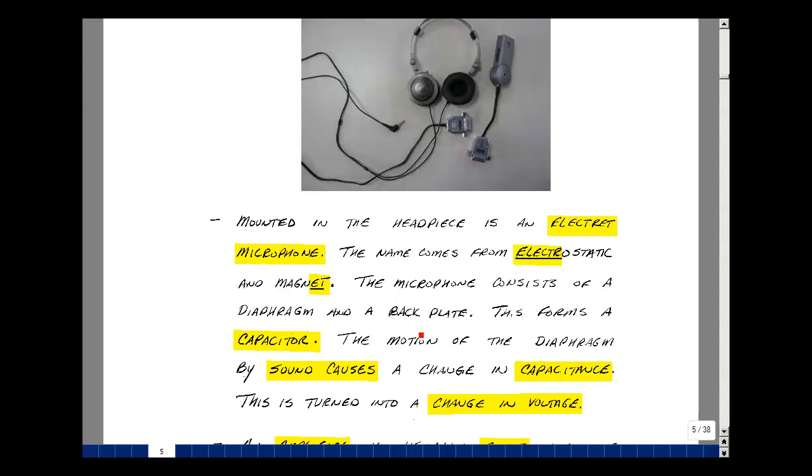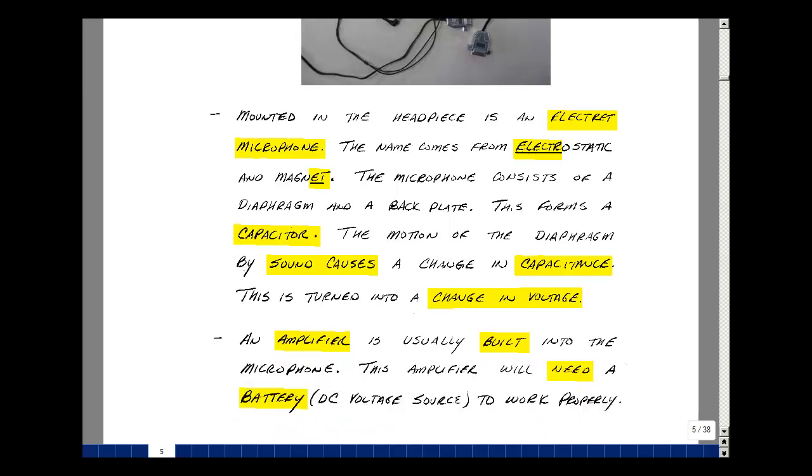It actually forms a capacitor. The motion of the diaphragm by sound hitting it causes a change in capacitance. If the charge is constant, we have Q equals C times V, so if capacitance changes, the voltage has to change. We're able to turn sound into a change in voltage. This change is very small, so usually inside the microphone is an amplifier consisting of a JFET transistor, Junction Field Effect Transistor. We'll talk about this in ECE 302. Whenever you have an amplifier, you have to provide a biasing voltage, really a DC voltage,